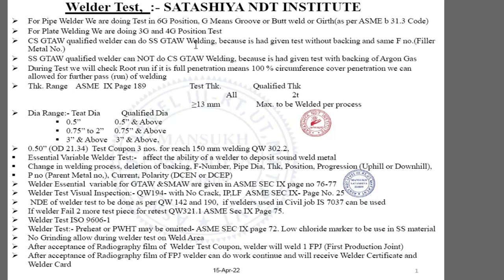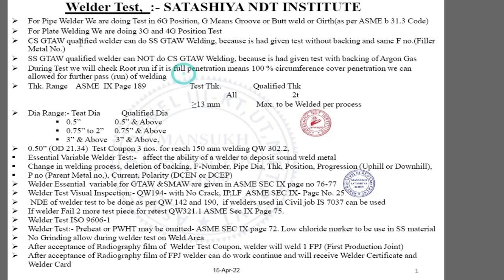We will start about the welder test. Normally we are doing welder test in the 6G position for piping. G means groove, groove means butt weld, butt weld means girth — girth is a term from ASME B31.3 code.